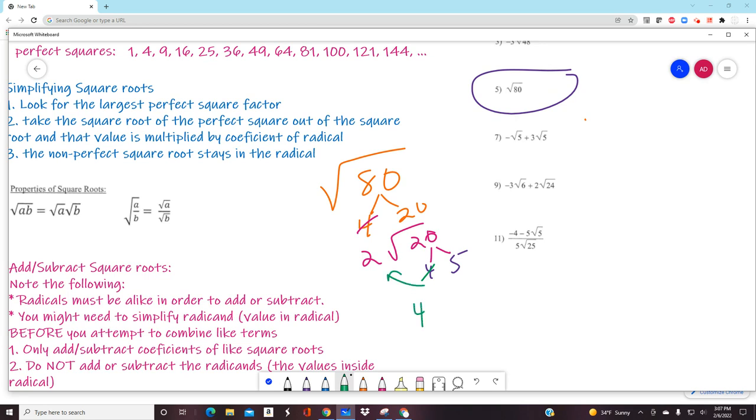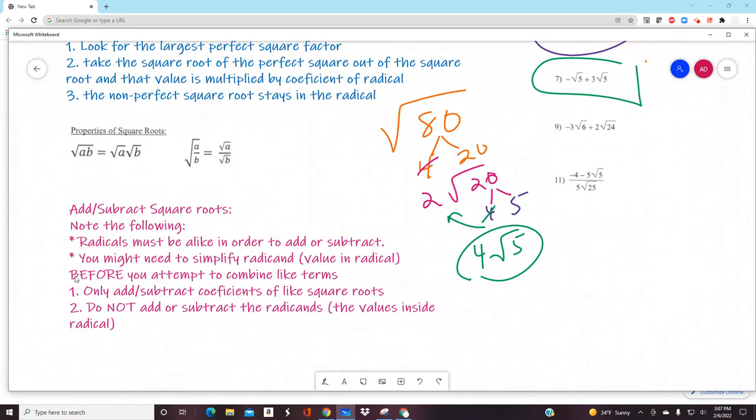Over here, whenever you're adding or subtracting, that's going to follow these steps. Adding and subtracting - the radicands must be the same, which they are right here. So I have negative square root of 5 plus 3 square root of 5, makes 2 square root of 5. Done.